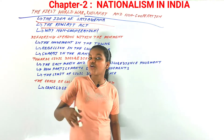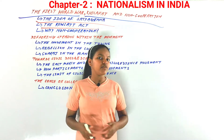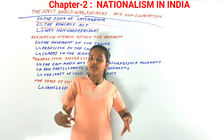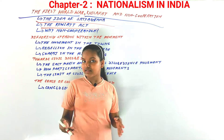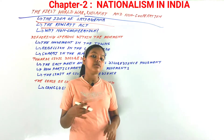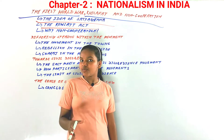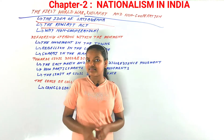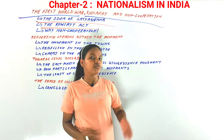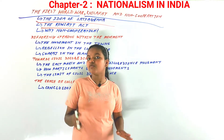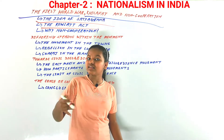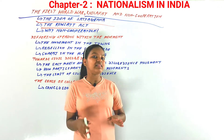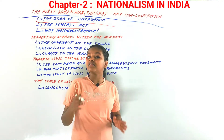On 13th April 1919, the infamous Jallianwala Bagh massacre took place. Many people had gathered in the enclosed Jallianwala Bagh park — some for meetings about the Rowlatt Satyagraha and many for the annual Baisakhi fair. General Dyer entered the park, blocked all exits, and ordered his army to fire. Thousands of people were killed in that infamous incident on 13th April 1919 by the command of General Dyer.